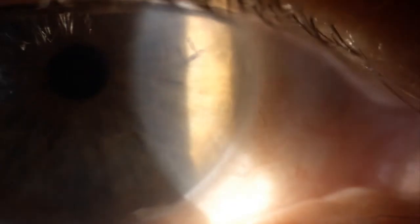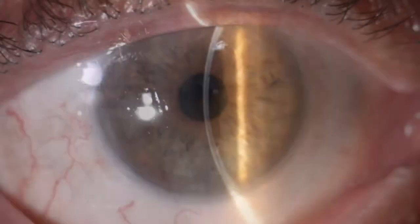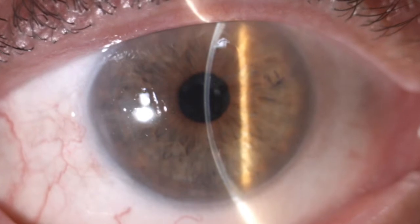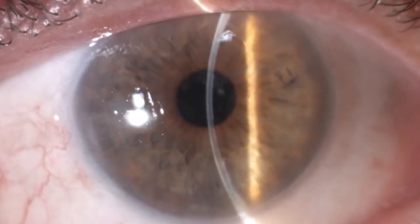As early as four days postoperatively, the cornea is perfectly transparent in the absence of air in the anterior chamber. Two weeks after DMEK, vision is 20/20 without correction.